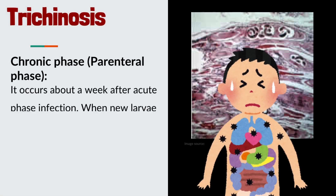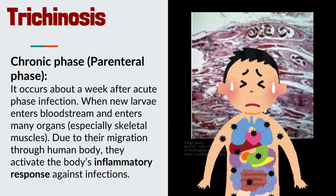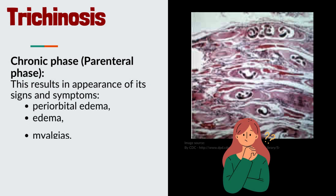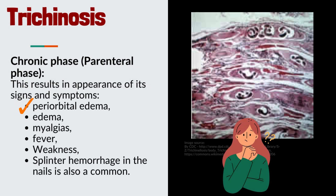Chronic phase of trichinosis, also known as the parenteral phase: it occurs about a week after the acute phase infection, around the time when new larvae enter the bloodstream and reach many organs, especially skeletal muscles. Due to their migration through the human body, they activate the body's inflammatory response against infections. This results in signs and symptoms including periorbital edema, edema, myalgia, fever, weakness, and splinter hemorrhages in the nails.